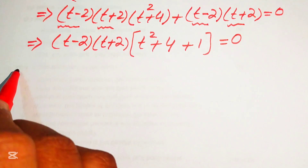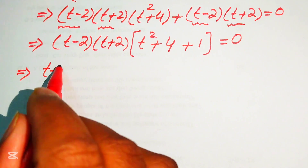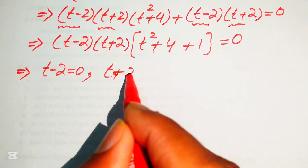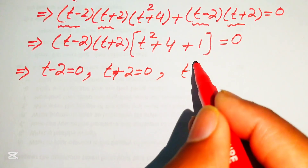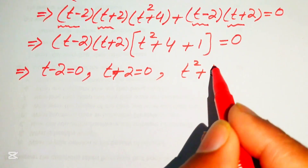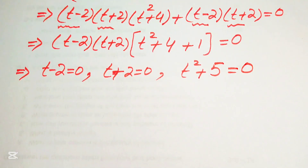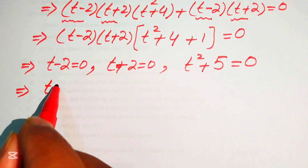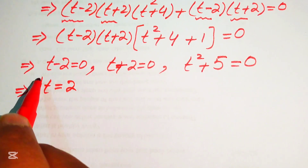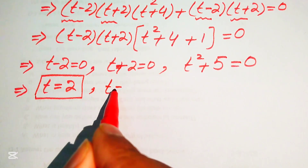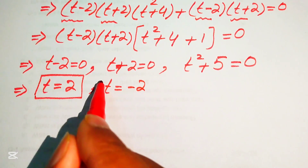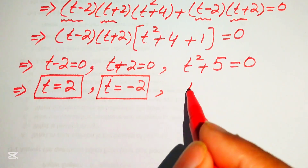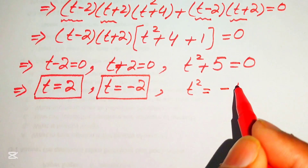We divide the equation into three cases. Case 1: t minus 2 equals 0, giving t equals 2. Case 2: t plus 2 equals 0, giving t equals minus 2. Case 3: t squared plus 5 equals 0, which gives t squared equals minus 5.